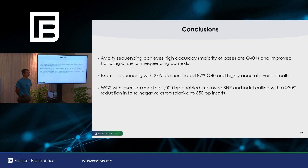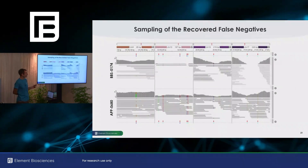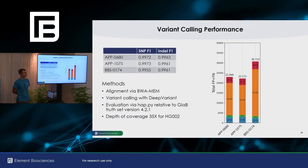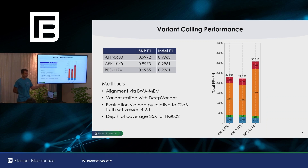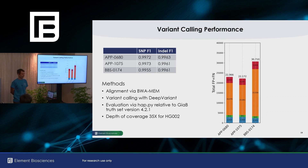Question about long insert WGS: does the Aviti sequencer support longer inserts compared to Illumina? Yes — the amplification methods are completely different. We haven't seen these insert lengths in publicly available Illumina SBS data. The way we do amplification via rolling circle versus SBS bridge amplification are completely different, which is why we achieve these insert lengths.